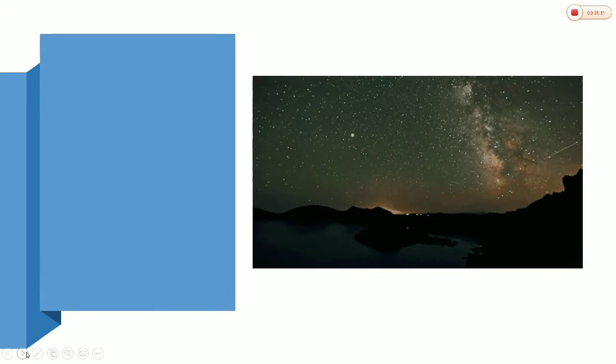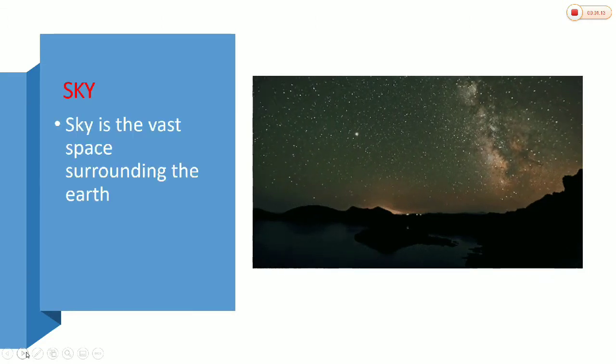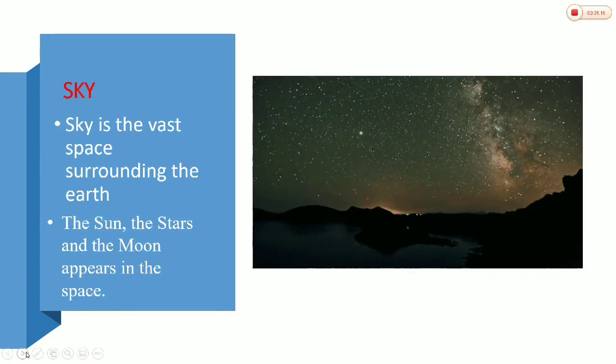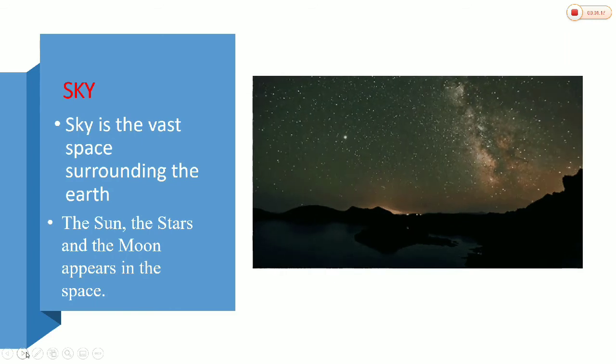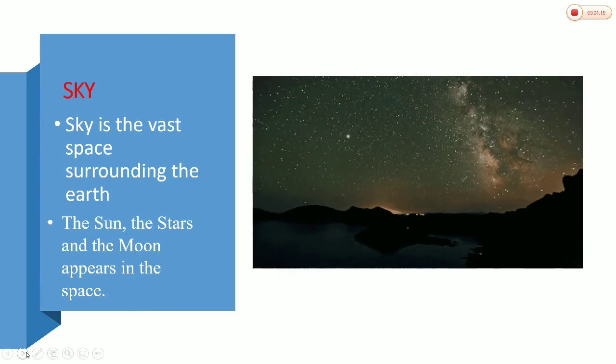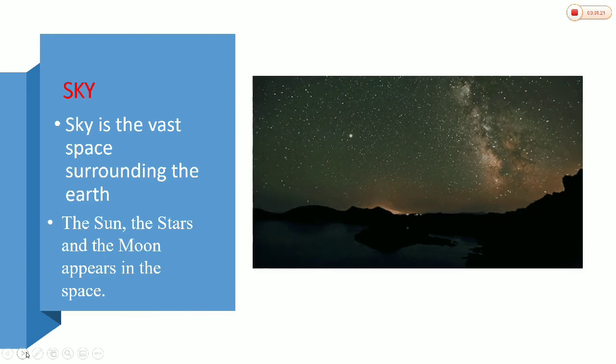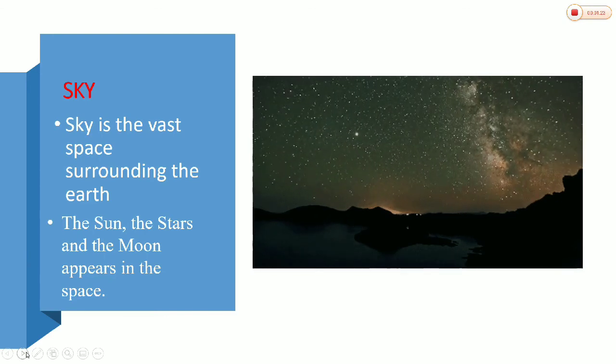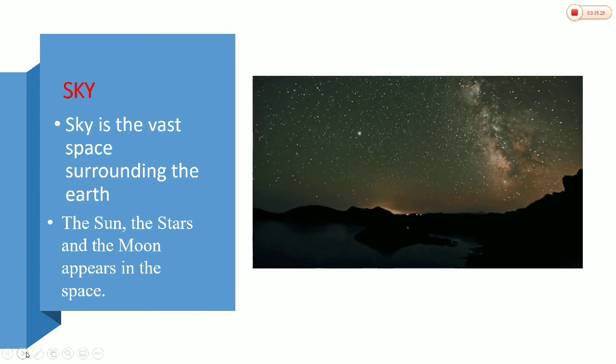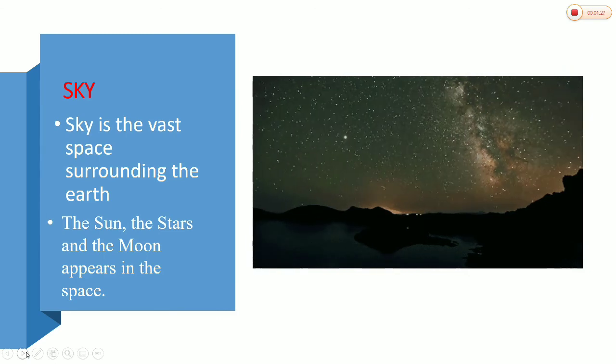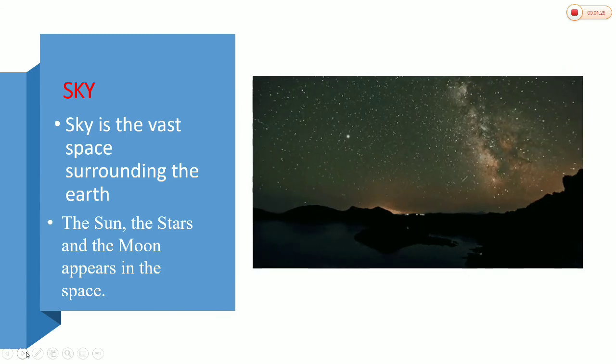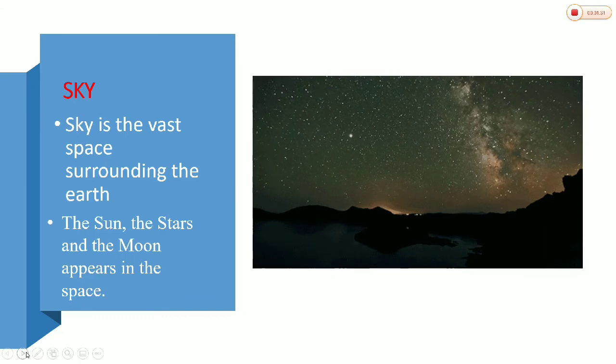The sky. Above the Earth is the sky. Sky looks blue, though it is not really so. It is just a vast space surrounding the Earth. The sun, the stars and the moon are heavenly bodies in the space.